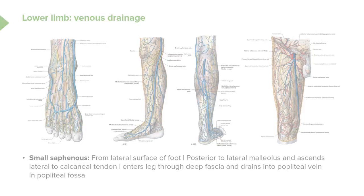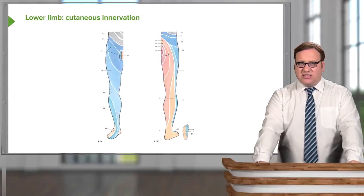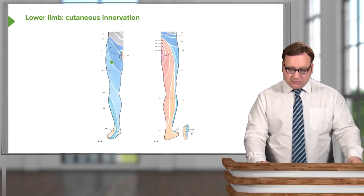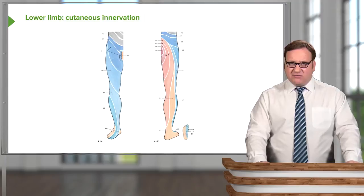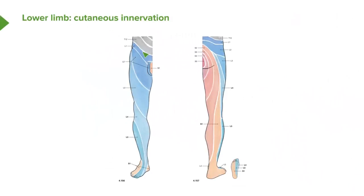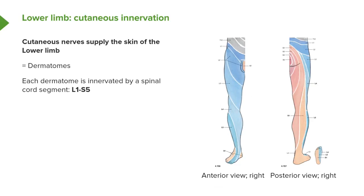Moving on to the cutaneous innervation, this is very similar to the upper limb. We have a whole series of dermatomes — regions of the skin on the lower limb with specific cutaneous innervation. We can see T12, L1, L2, L3, L4, L5, and then we move on to the sacral spinal cord segments as we pass up the posterior surface of the limb. Each dermatome is innervated by a spinal cord segment, from L1 through to S5, including the perianal region. L4 and L5 and S1 supply the sole of the foot.